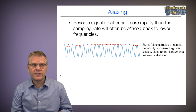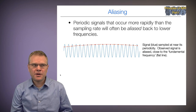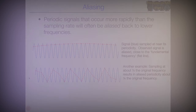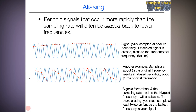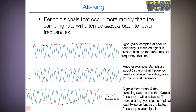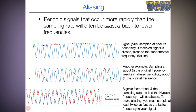Here we see some examples of aliasing. Let's say the blue sinusoidal curve is the true signal and it's sampled near its periodicity — we'd model the component as a flat line, the fundamental frequency. For another example, sampling at about half the original frequency still results in an alias periodicity of about one-fourth of the original frequency. Signals faster than one-half the sampling rate — called the Nyquist frequency — will always be aliased. To avoid aliasing, we must sample at least twice the fastest frequency in the signal. As we sample quicker and quicker, once we reach two times the signal period, we can recapture the periodicity, and at around four times we have basically a perfect reconstruction. That's an argument for faster sampling of fMRI data.